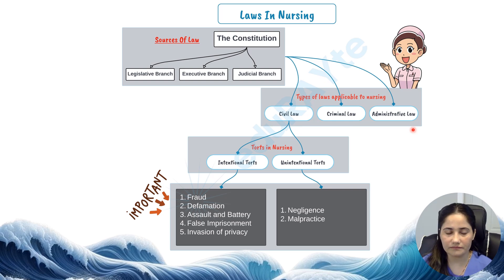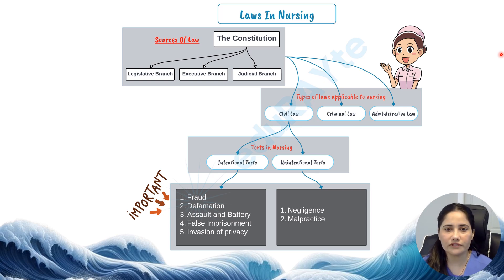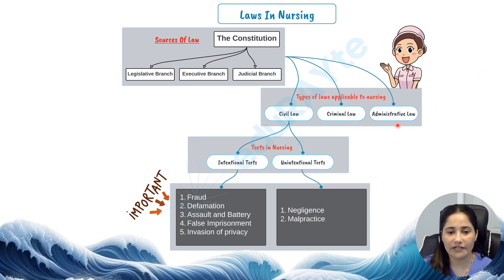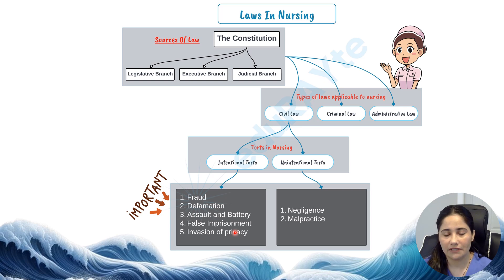In nursing practice there are two big categories: civil issues and criminal ones. Civil issues often deal with contracts and torts, where a preponderance of proof is most likely needed. Criminal issues are serious ones like felonies — for example, manslaughter — or misdemeanors like minor theft, where the proof needed is beyond a reasonable doubt. When we talk about torts, which are civil wrongs, we have intentional torts like fraud, defamation, assault, battery, false imprisonment, and invasion of privacy, where there is a deliberate action to cause harm; and unintentional torts like negligence or malpractice, where there wasn't intent to harm but harm occurred because the standard of care wasn't met.